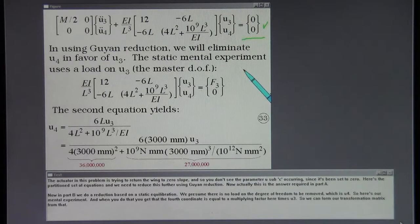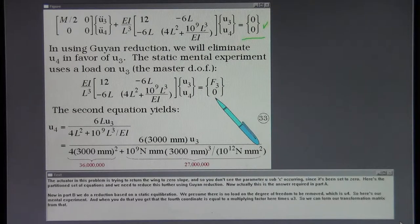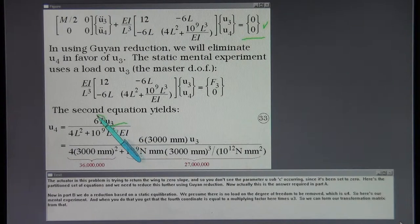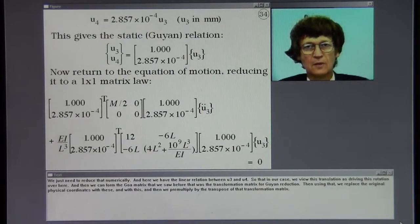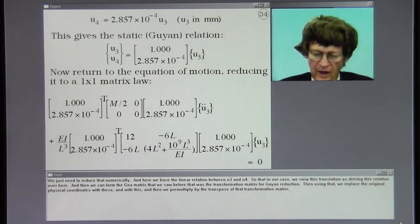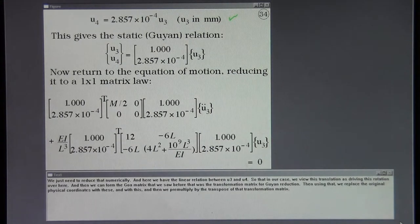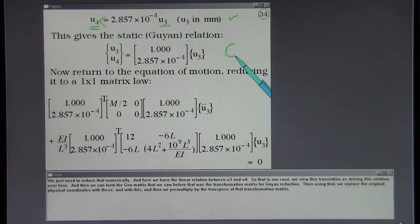We need to reduce this further using Guyan reduction. Now actually this is the answer required in Part A. Now in Part B we do a reduction based on a static equilibration. We presume there is no load on the degree of freedom to be removed which is u four. So here's our mental experiment. And when you do that you get that the fourth coordinate is equal to a multiplying factor here times u three. So we can form our transformation matrix from that. We just need to reduce that numerically. And here we have the linear relation between u three and u four.